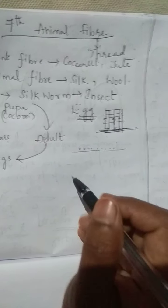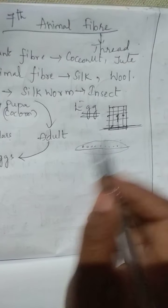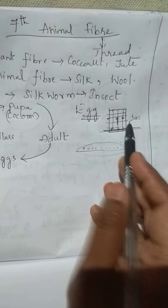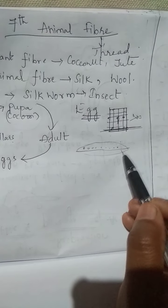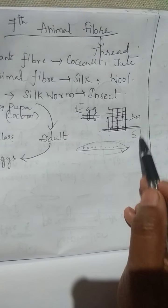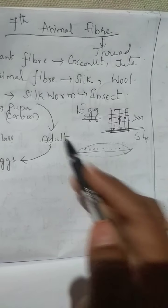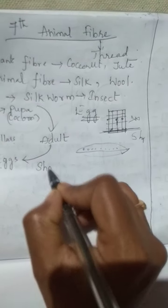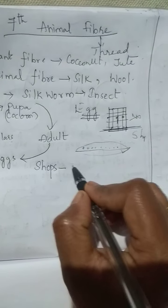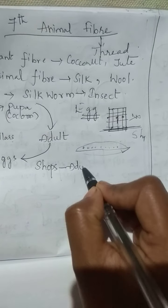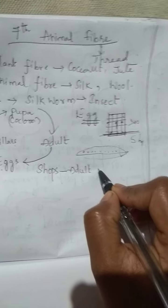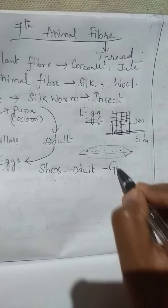If we don't have eggs or moths, some people will buy eggs from shops. Or else they will buy moths only. The shops where we can find adult silkworms are called greenages.